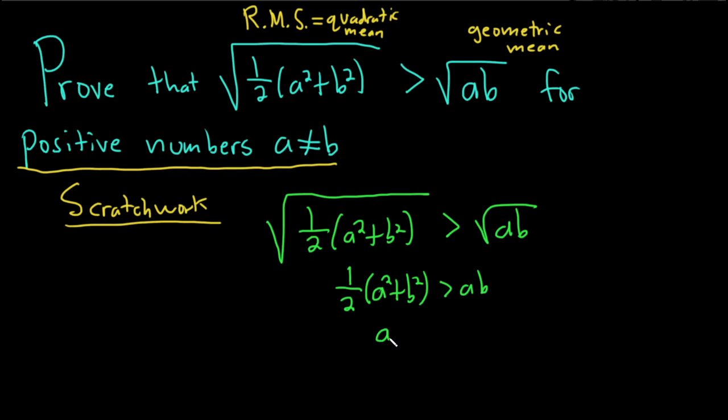Then we could multiply by 2, so that would be A squared plus B squared, greater than 2AB. Maybe we can subtract this, so it'll give us A squared minus 2AB plus B squared, greater than 0.